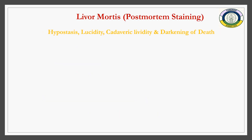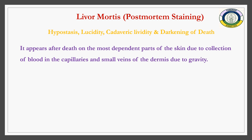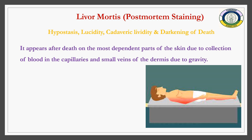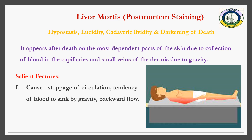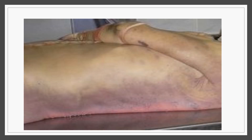The next stage is livor mortis, also called hypostasis, cadaveric lividity, and darkening of death. It is the settling of blood in the dependent parts of the body. After the circulatory system stops, blood collects in the toneless capillaries due to gravitational forces. The color of post-mortem lividity is bluish-purple and is more clearly visible in fair-skinned persons.